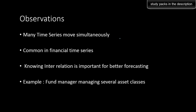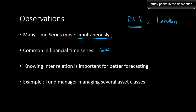A few observations from those graphs: many times series move simultaneously, so we can make use of other time series to forecast a given time series. This happens mostly in financial time series — one stock market gets affected by the movement in another. For instance, the New York stock market will be affected by fluctuations in the London stock market, and data from New York can be used to forecast values in the London stock exchange.